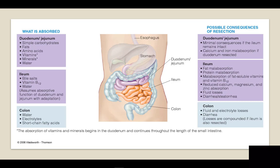Looking at the graphic, one would think the worst part to lose would be the first part of the small intestine, because that is where most of the nutrients are absorbed. But in reality, the last portion of the small intestine is most critical. The reason for this is because the bowel has an amazing ability to adapt — the remaining tissue will thicken and adapt, taking on the responsibility of the section that was removed.